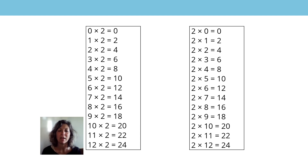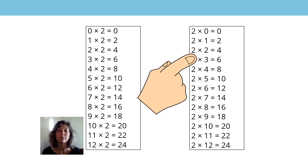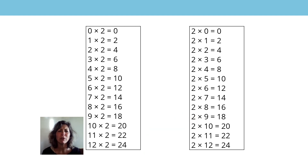Shall we have a go at some together? What's the missing number? That's right, it's the product. Six twos are 12. Yes, I've covered a factor this time. Two three times is six. Yes, I've covered a factor again. Two nine times is 18. Well done, you really know your two times table facts.